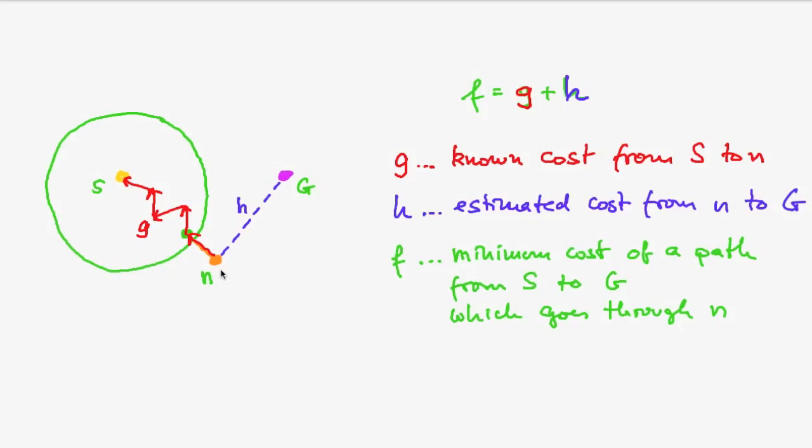And to see this is pretty easy. Because if the path goes through this node, then I know for this part of the path it has cost g. And for the remaining part it has at least a cost of h. So the sum is the minimum of the cost I will have from s over n to g.